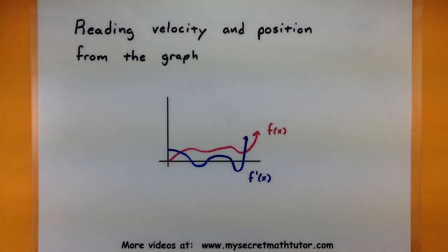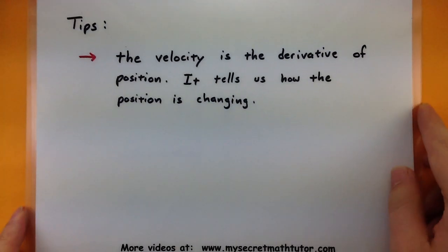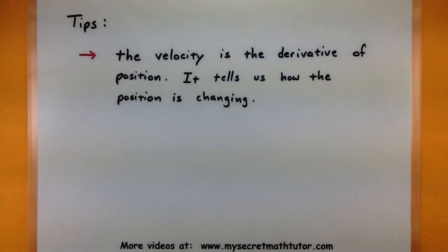In order for this to work out, there's just one big thing that you really have to remember. The velocity is the derivative of position, so it's always giving us information about how that position is changing.